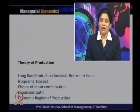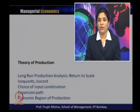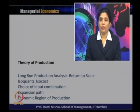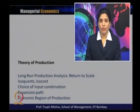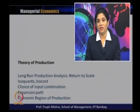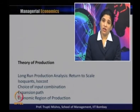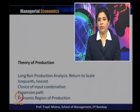Long-run production analysis was discussed using returns to scale — constant returns to scale (proportional change in output equals proportional change in input), increasing returns to scale (proportional increase in output exceeds proportional increase in input), and decreasing returns to scale (proportional increase in output is less than proportional increase in input). The homogeneous production function was also discussed: degree of homogeneity equal to one indicates constant returns to scale, greater than one indicates increasing returns, and less than one indicates decreasing returns.